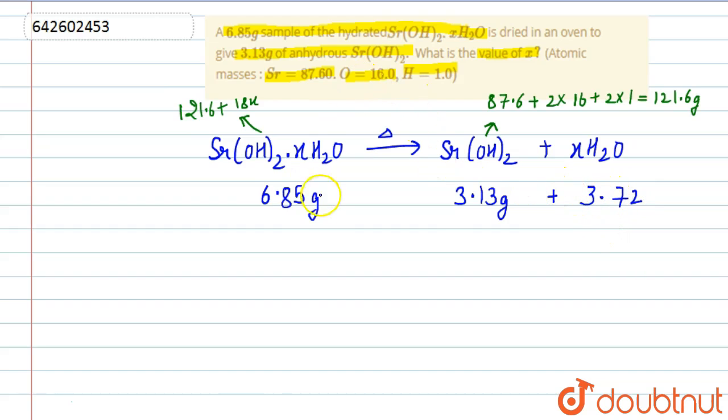Now we know that 121.6 plus 18x, that is one mole of Sr(OH)₂·xH₂O, will be the molar mass. We will find the percentage of water by both equations.